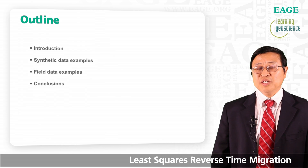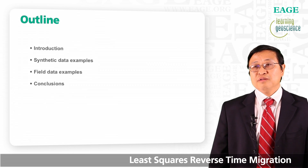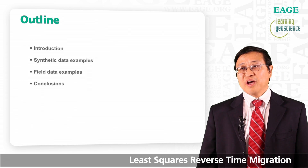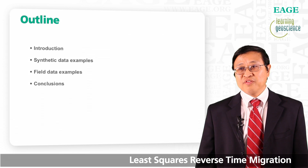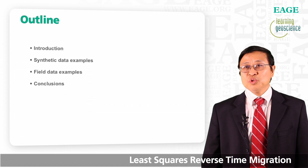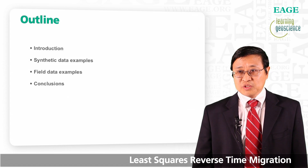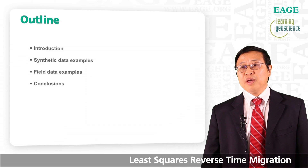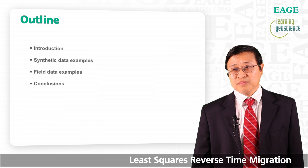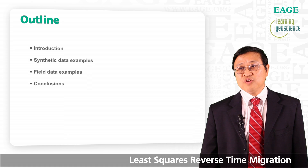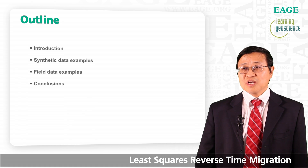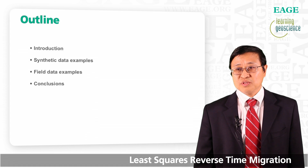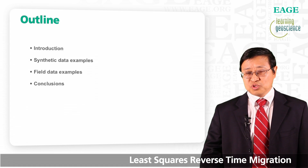Here is the outline of this presentation. First, I will describe what is least squares RTM. Then I will show you some synthetic data examples and use them to illustrate the benefit of least squares RTM as compared with the conventional RTM. Then I will talk about field data application and discuss some of the challenges and practical solutions, and finally reach some conclusions.